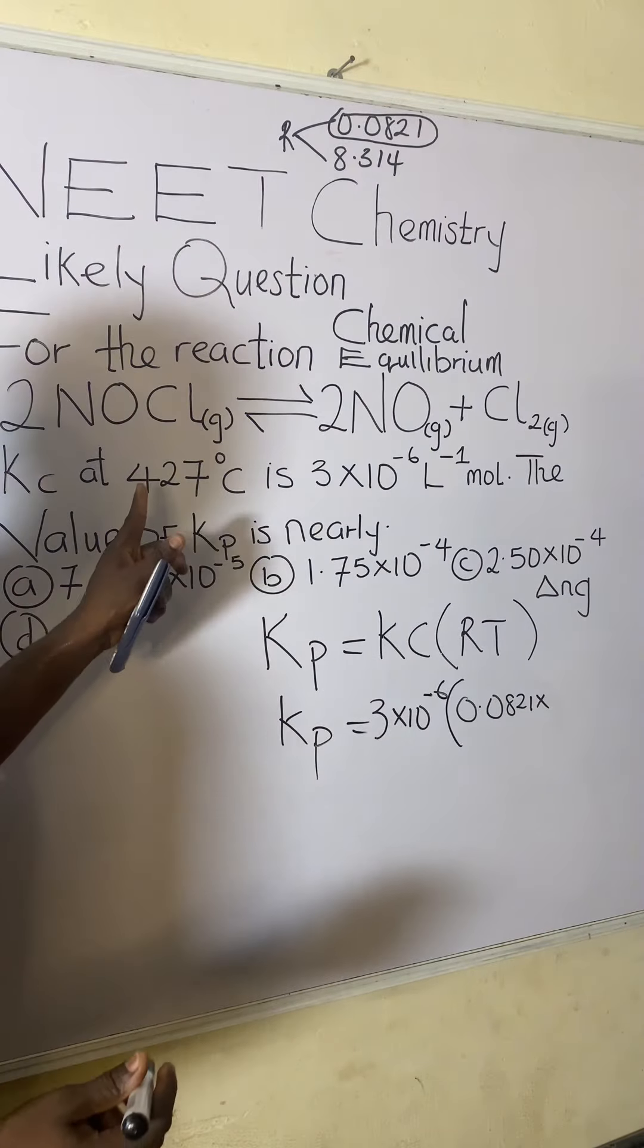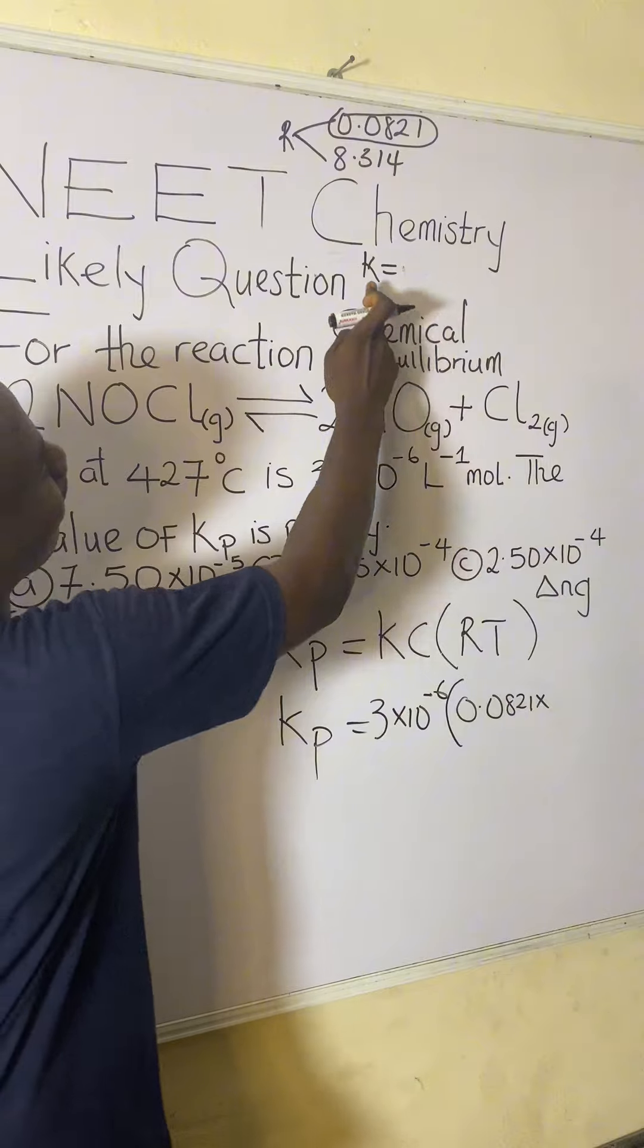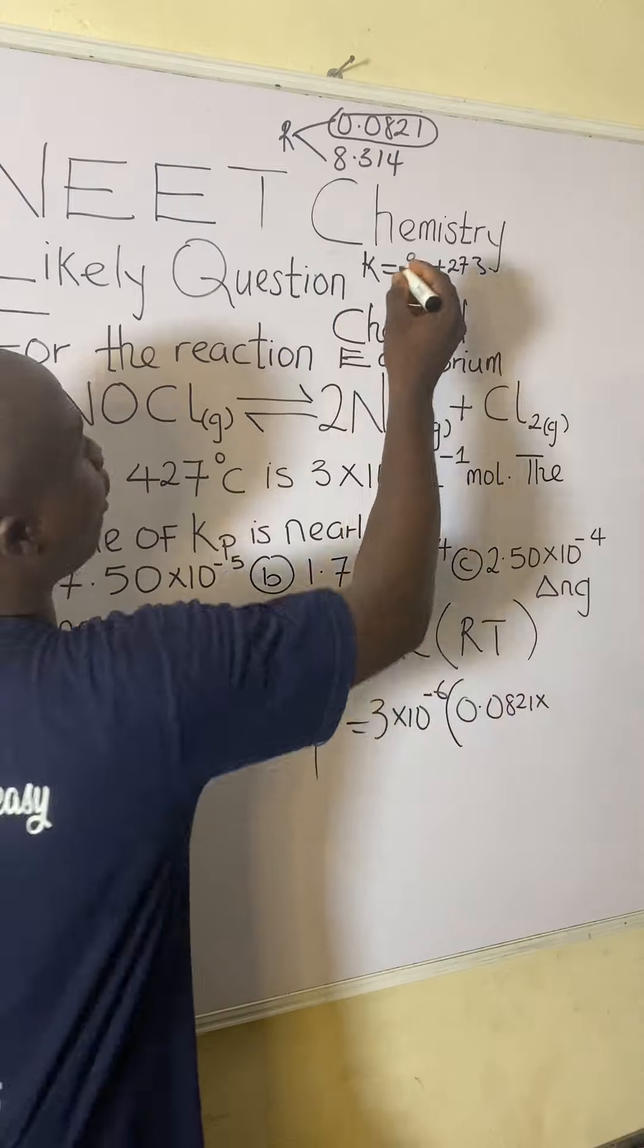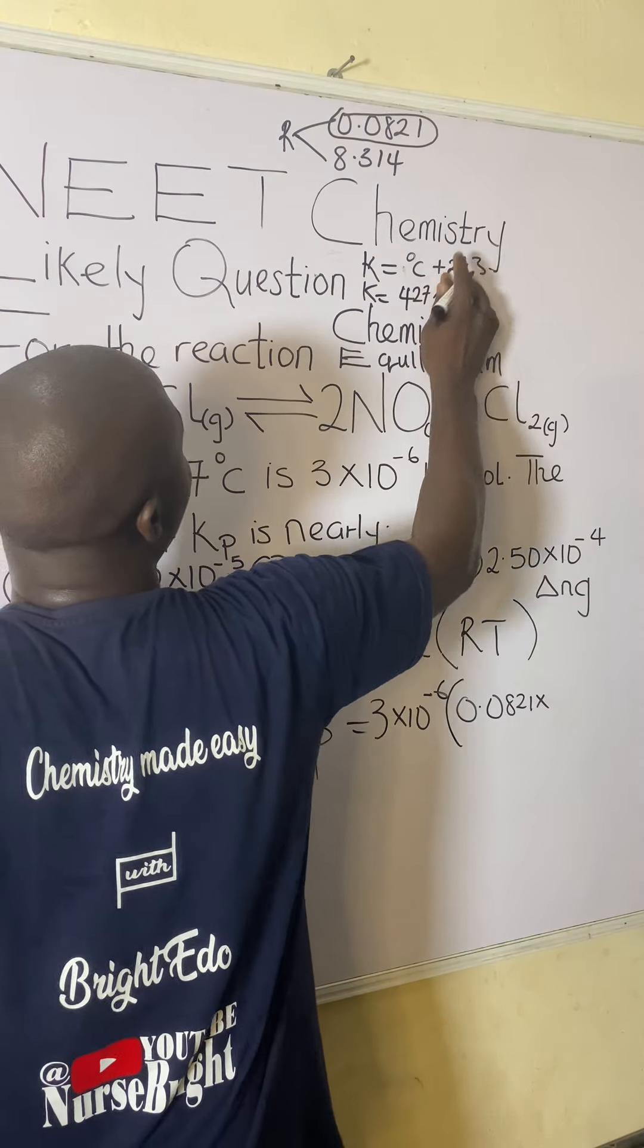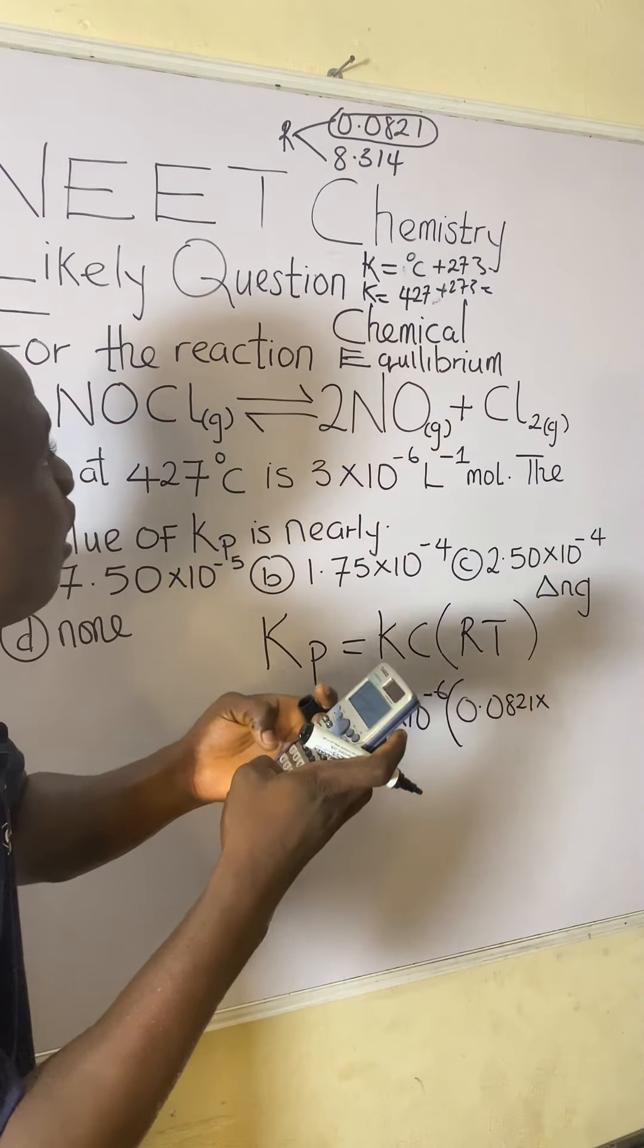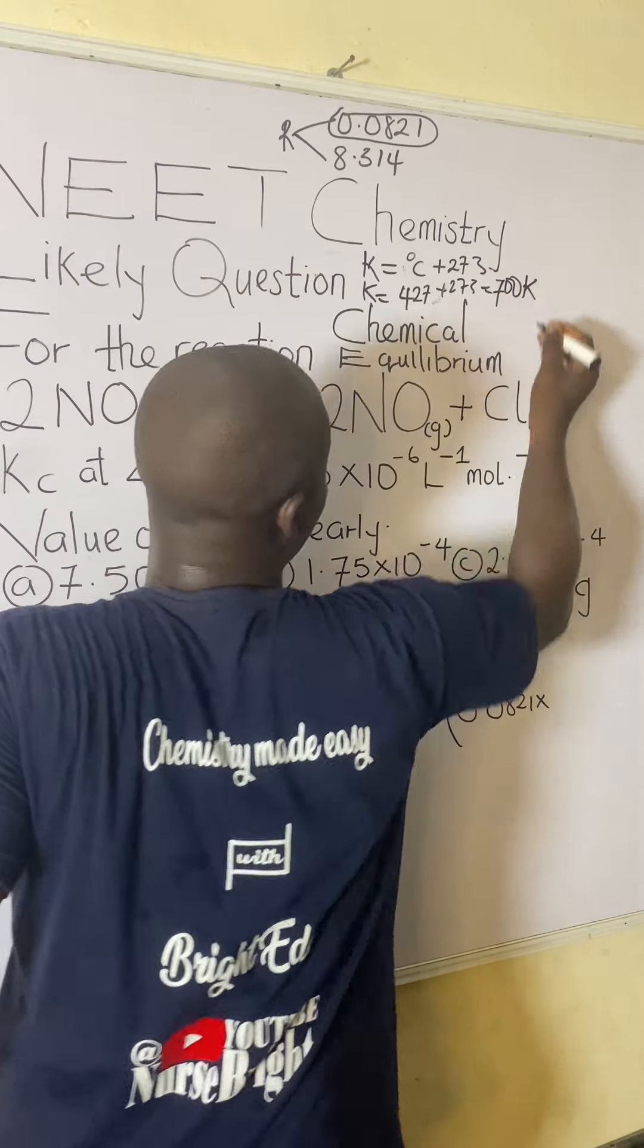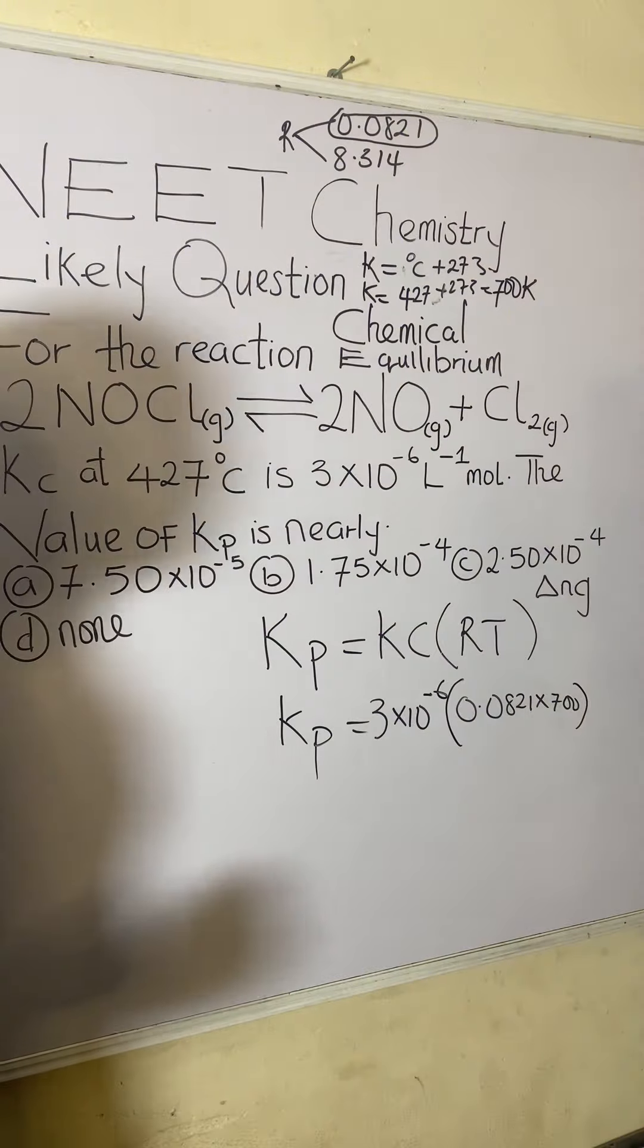The constant I have to use is 0.0821 times temperature, which is T. Now, I already said that your temperature should be converted to Kelvin. So how do you convert degrees Celsius temperature to Kelvin? You simply add 273 to degrees Celsius. I believe you are following. So Kelvin will be equal to 427 plus 273, which equals 700 Kelvin. So we're having here to be 700 Kelvin K. So times 700, close bracket.